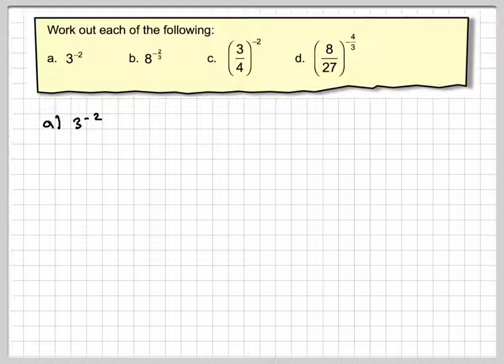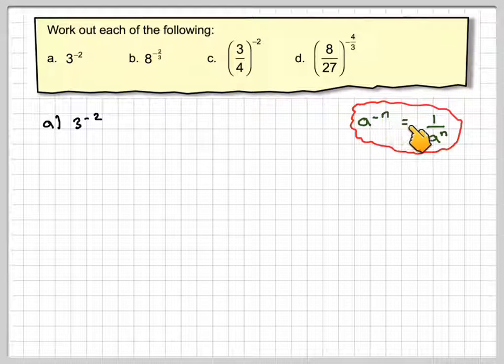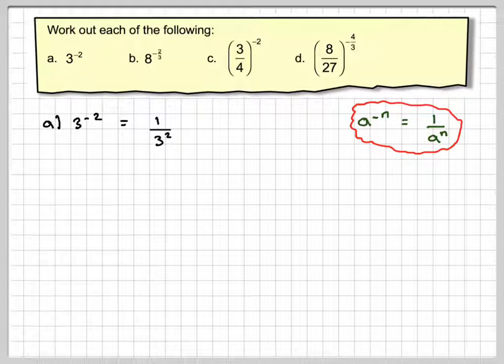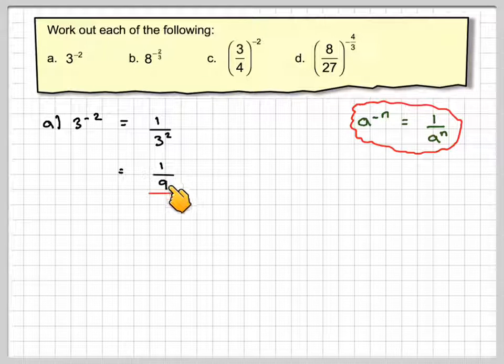So 3 to the minus 2, what we've got to remember is that a to the minus n is 1 over a to the n. So that gives me 1 over 3 squared, if I apply that rule to that, and then 3 squared is 9. So the final answer is 1 over 9.